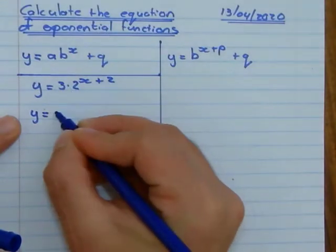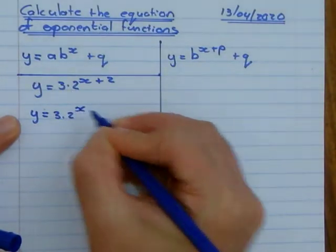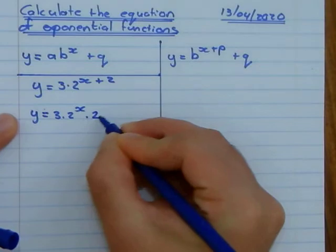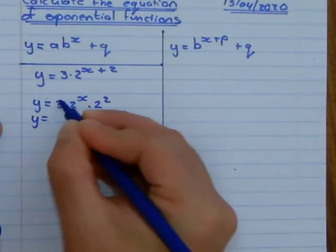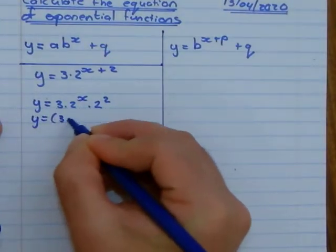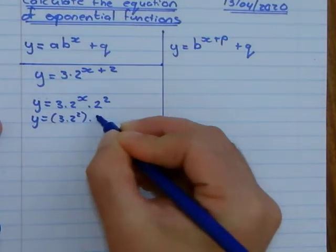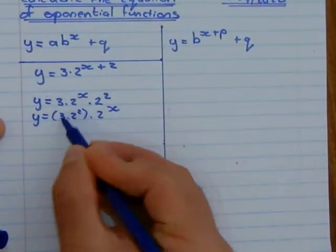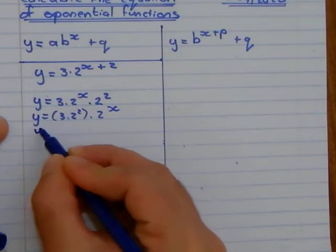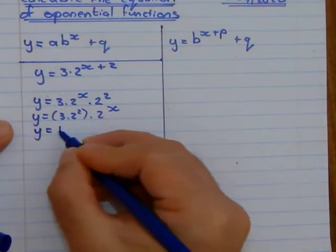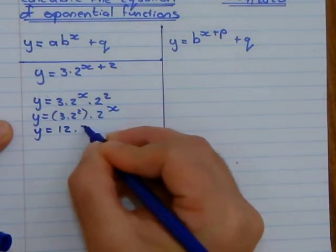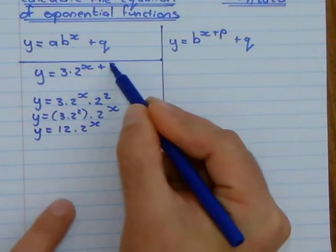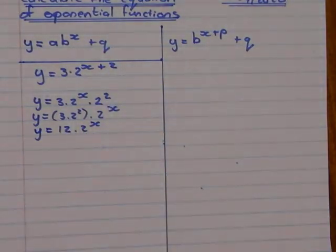I can break this up to 3 times 2 to the power of x using my exponent laws. So therefore, take the two values together. So it's 3 times 2 to the power of 2 times 2 to the power of x. This is 4 times 3, so times 3 is 12 times 2 to the power of x. Can you see my p value and my a value are influenced in the same way?